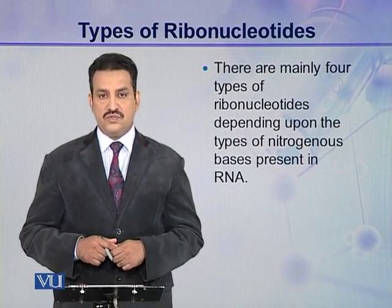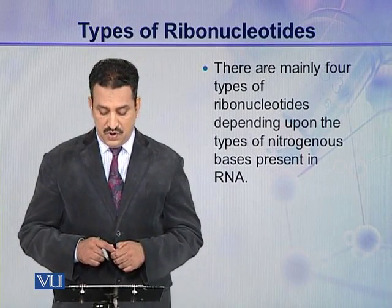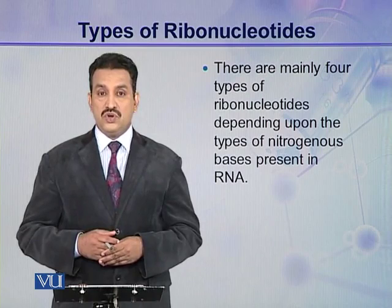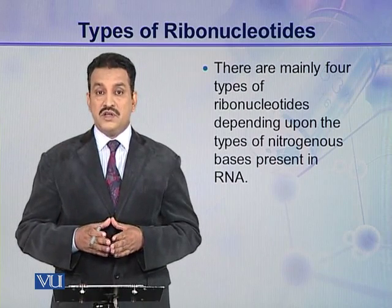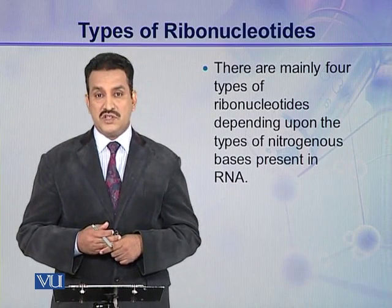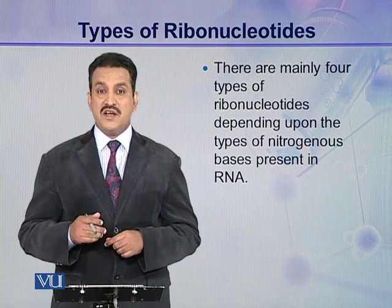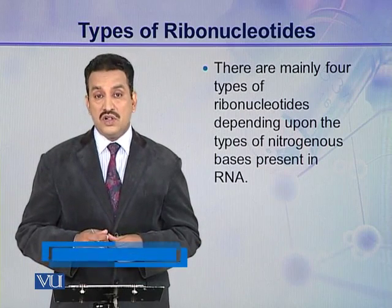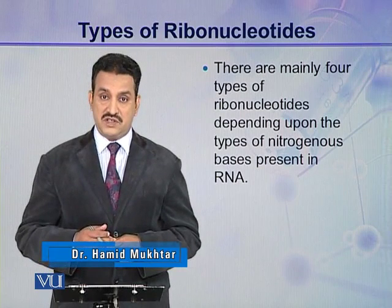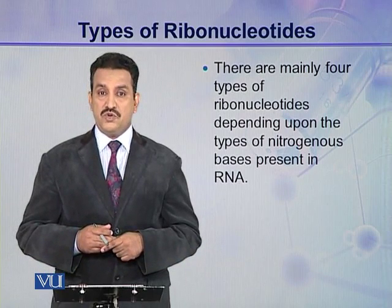There are four main types of ribonucleotides present in cells, and it depends upon the types of nitrogenous bases present in a ribonucleotide. The structure of a ribonucleotide has three components: one is pentose sugar (ribose sugar), the other is phosphoric acid, and the third is a nitrogenous base. The phosphoric acid and ribose sugar are the same in all ribonucleotides; the only difference is in the nitrogenous base. There are four types of nitrogenous bases present in a ribonucleotide.